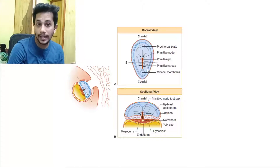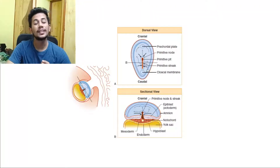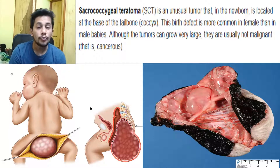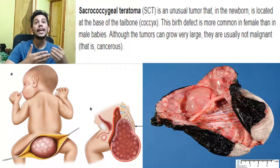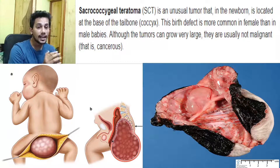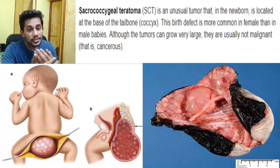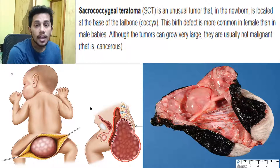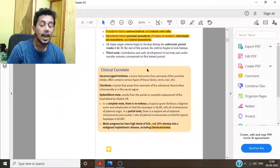Now let's discuss a clinical aspect: what if the primitive streak doesn't close properly? If the primitive streak doesn't close properly, we end up with a sacrococcygeal teratoma — a tumor derived from the remnants of the primitive streak. Since it comes from the primitive streak, it contains epiblastic cells, which can differentiate into all kinds of different cells — bone cells, nerve cells, hair, or teeth. All different kinds of cells can be found in a teratoma.